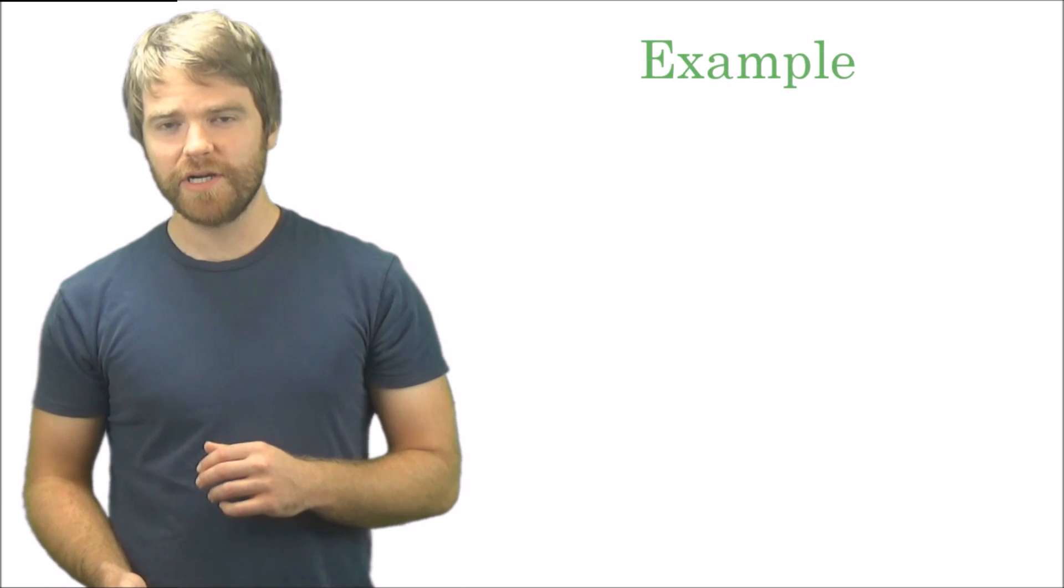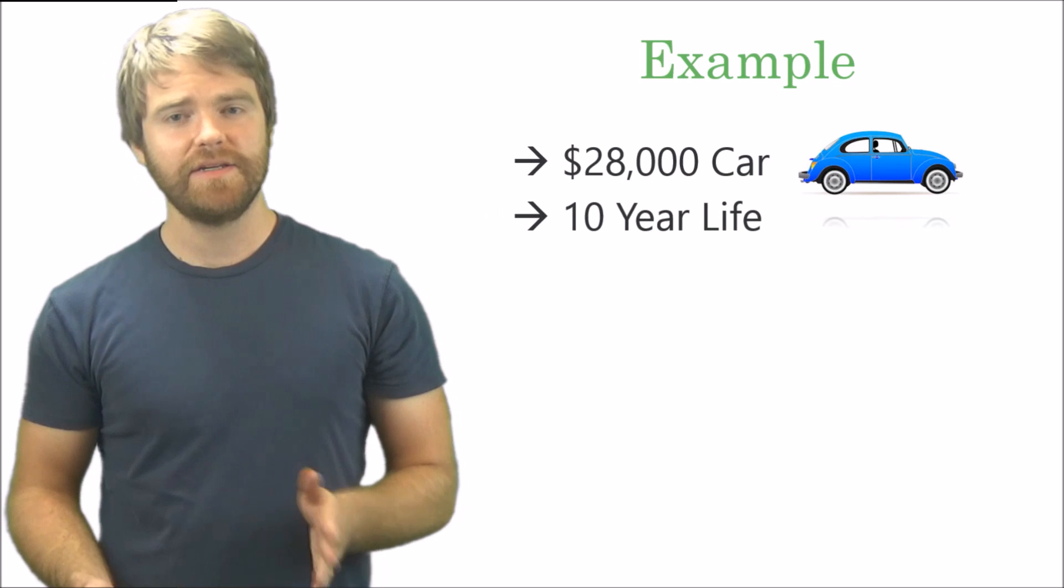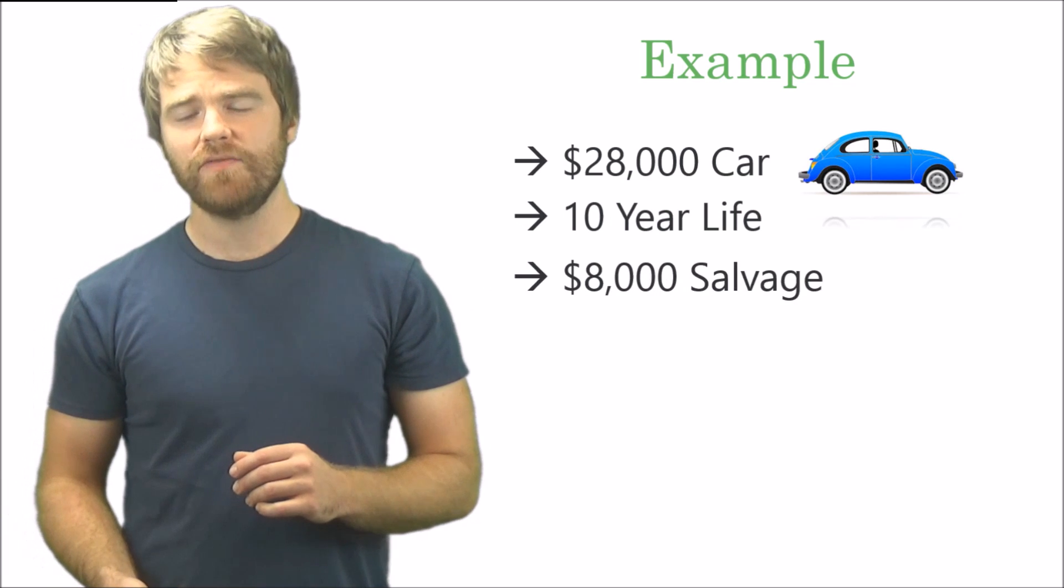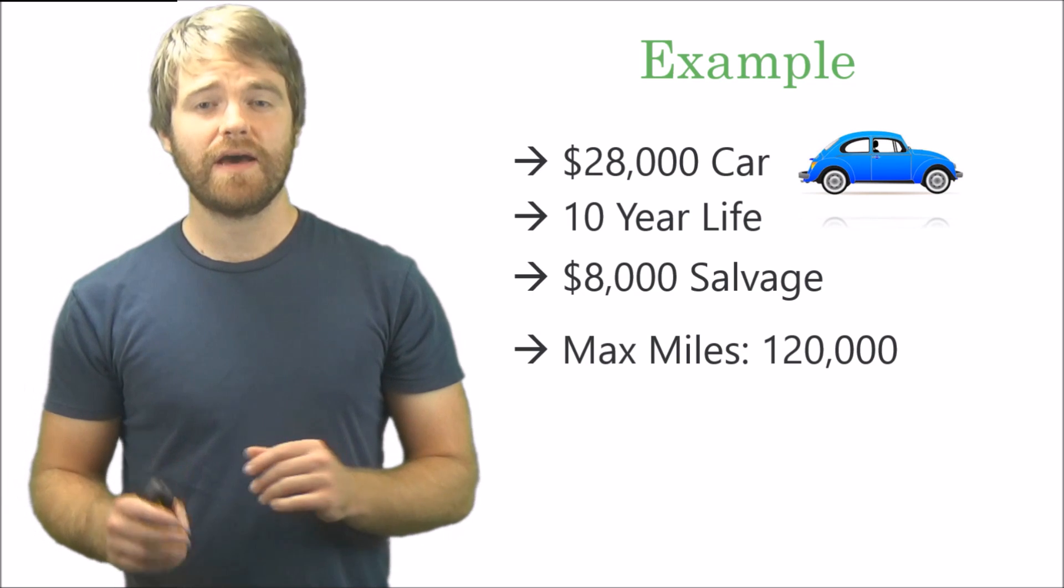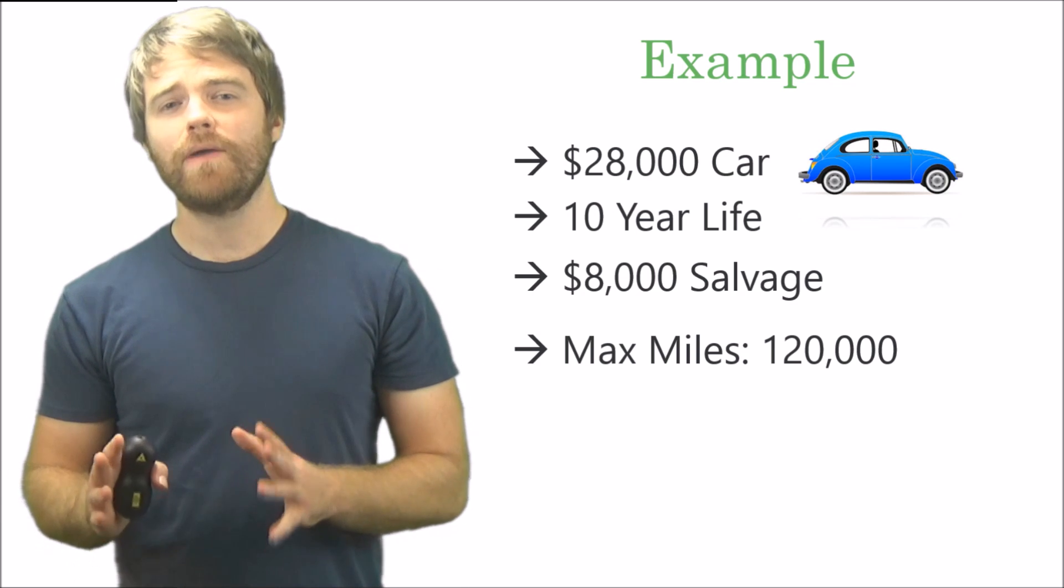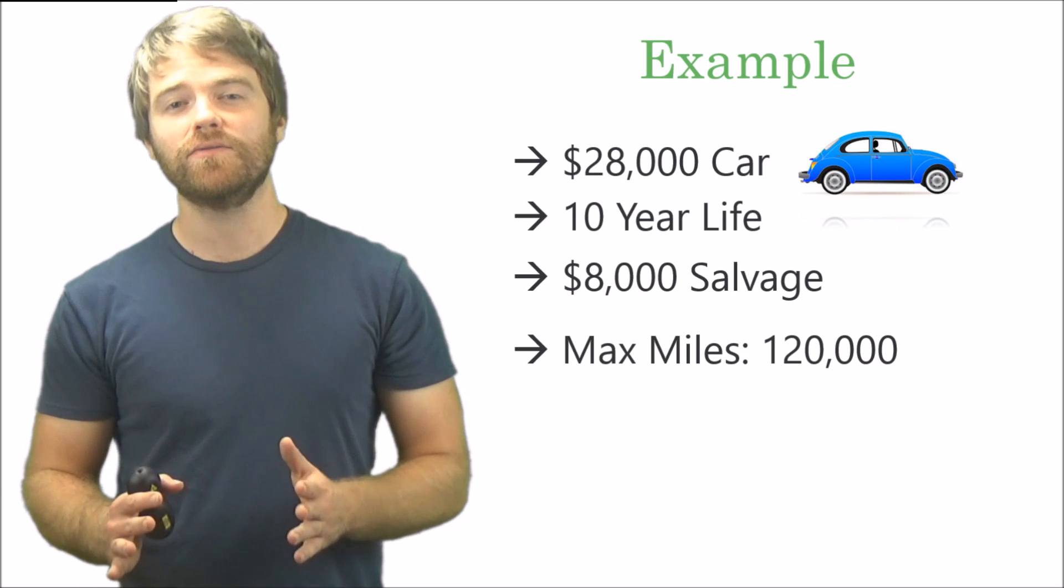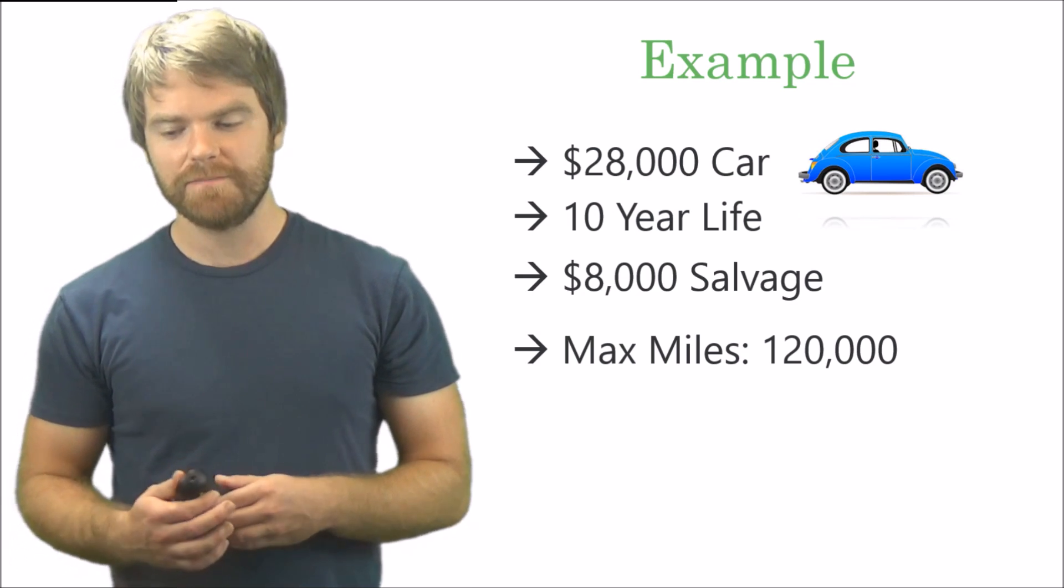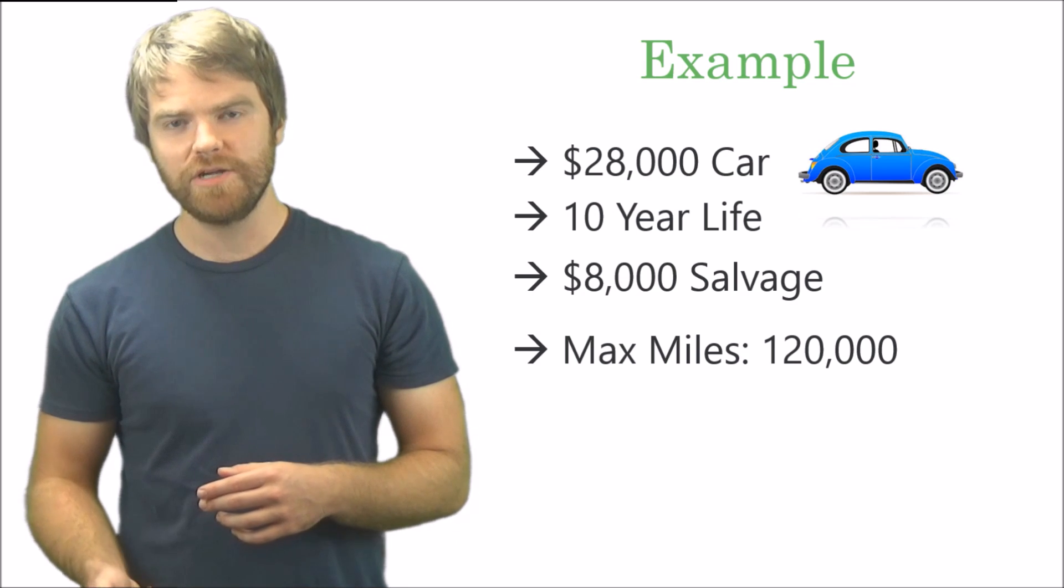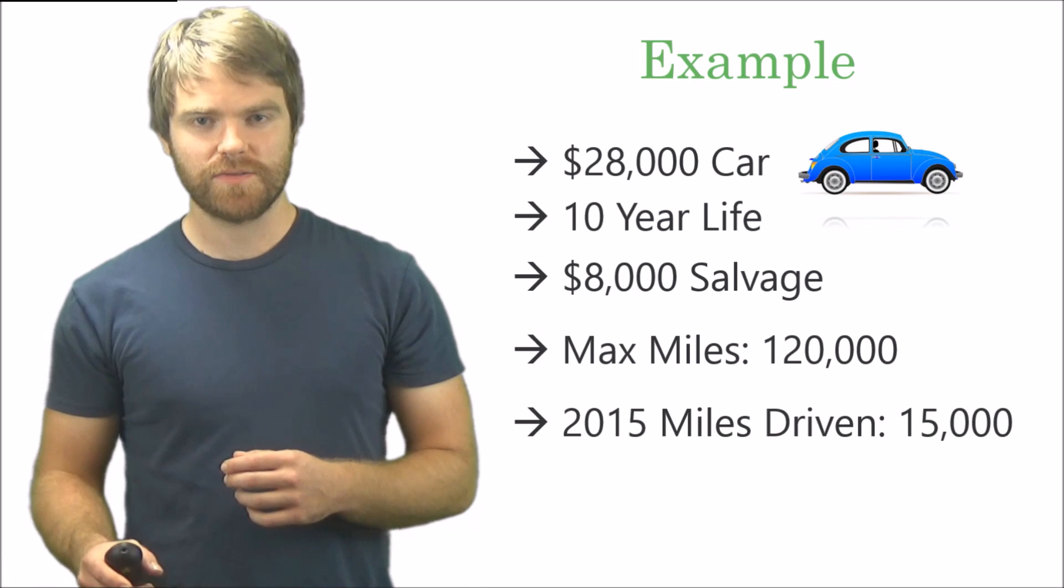Here's an example. Let's say you buy a $28,000 car. That car has a 10-year life, $8,000 salvage, and you can drive it for a maximum amount of miles of 120,000. Those miles there represent the activity or the unit. You measure its life in miles, not in years. So how long can you drive it for? That's a unit of activity. In 2015 you drove 15,000 of those miles. This is important information here. Take a look, jot it down if you need to.